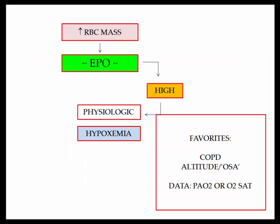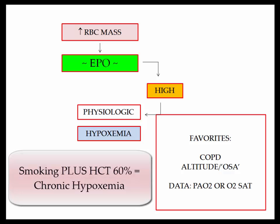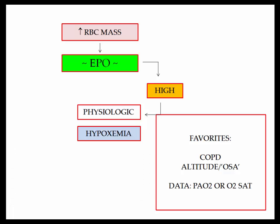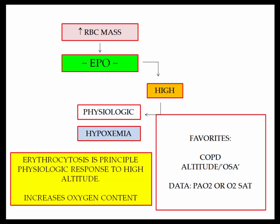Moving to elevated red blood cell mass with an elevated erythropoietin level — the common condition is physiologic erythrocytosis specifically related to hypoxemia. They give you a low O2 saturation, which drives EPO production. The patient with COPD will be obvious. If they present a patient who smokes and the hematocrit is elevated, they are telling you the patient has chronic hypoxia. It is hard to camouflage a patient living at altitude. The only way for them to trip you up is to mention altitude but not include the O2 saturation. Erythrocytosis is the principal physiologic response to high altitude.